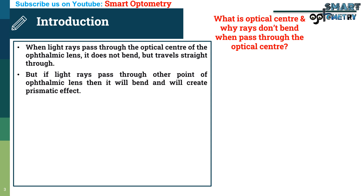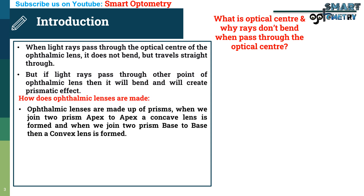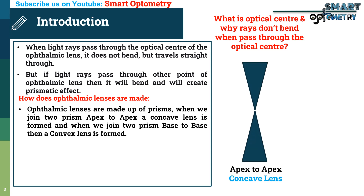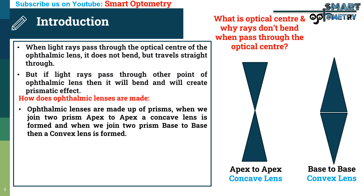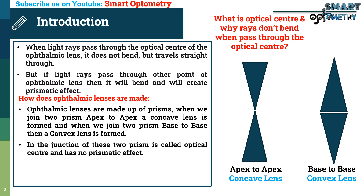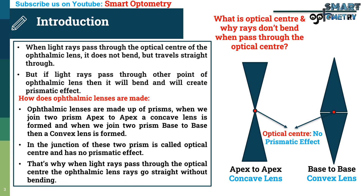To understand this, we first need to know how ophthalmic lenses are made. Ophthalmic lenses are made up of prisms. When we join two prisms apex to apex, a concave lens is formed. And when we join two prisms base to base, a convex lens is formed. The junction of these two prisms is called the optical center and has no prismatic effect. That is why when light rays pass through the optical center, they go straight without bending.